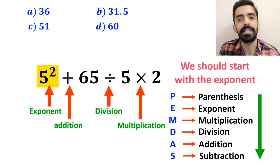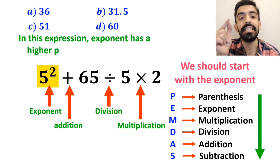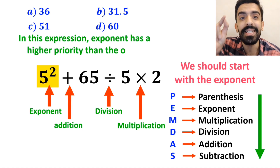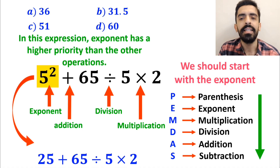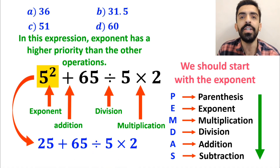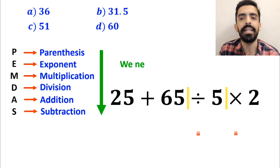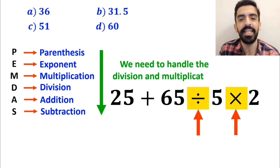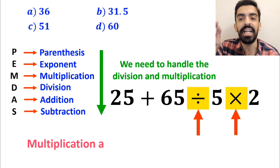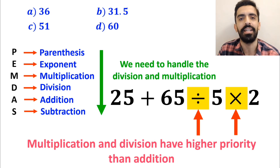We should start with the exponent, because in this expression the exponent has higher priority than the other operations. So this expression simplifies to 25 plus 65 divided by 5 times 2. In the next step we need to handle the division and multiplication, since they have higher priority than addition.